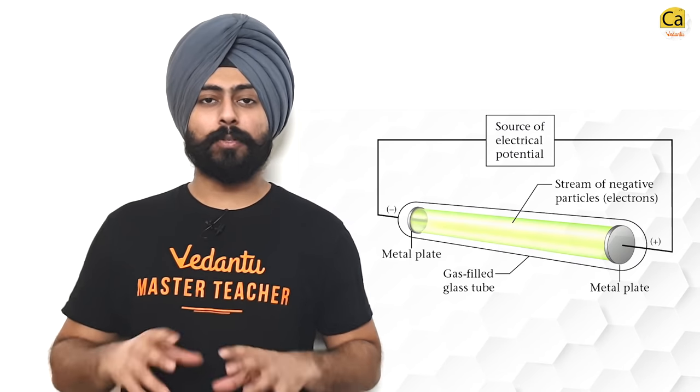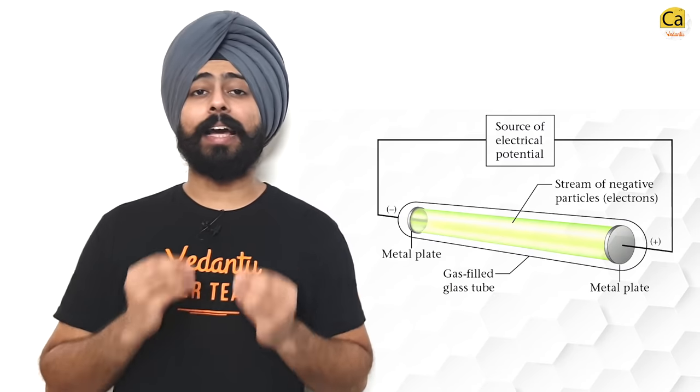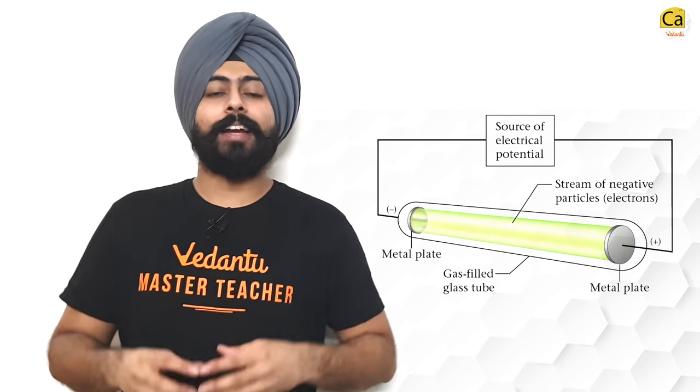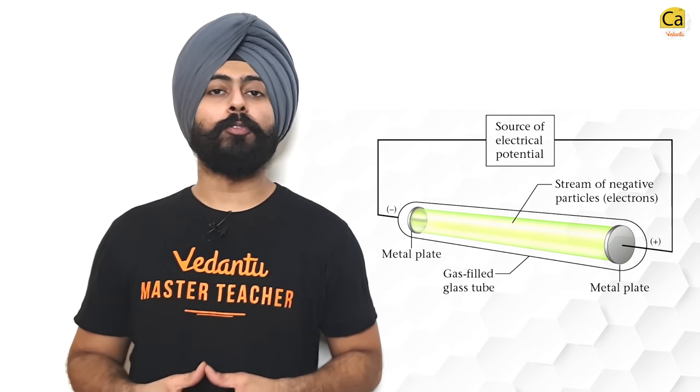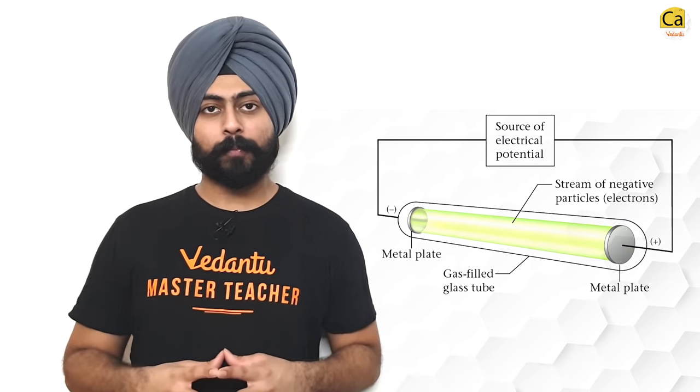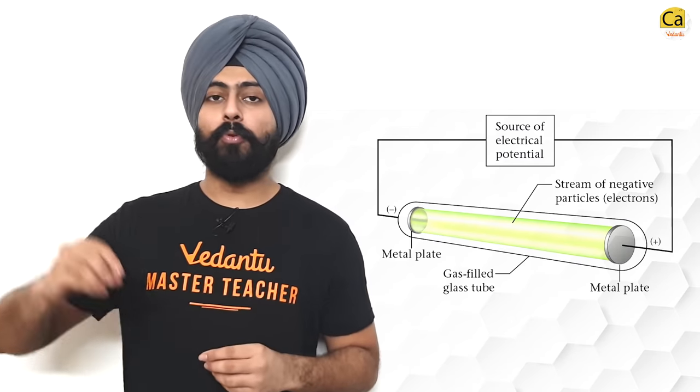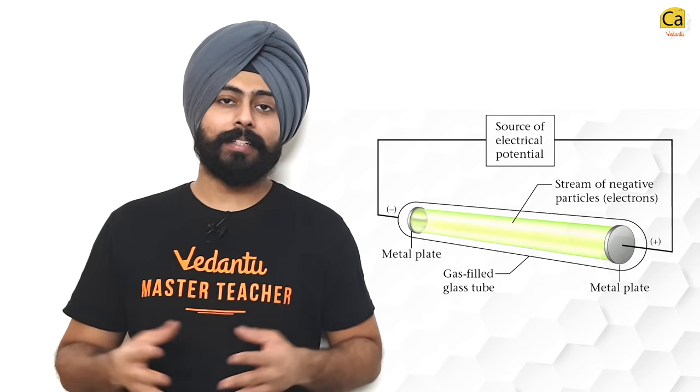What we do is we take a glass tube and inside that glass tube there is a gas at a very low pressure and we apply a very high voltage onto that gas. It allows the gas to conduct electricity, a discharge happens through the gas. Now when this discharge happens, we notice that there are certain particles or beams that move from the cathode to the anode. These beams are known as the cathode rays or cathode ray particles.